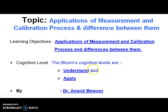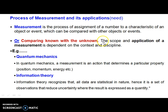I am Dr. Anand Bhavar. Today's topic of discussion is applications of measurement and calibration process and differences between them. The process of measurement, if you look at first, is basically a process of assignment of numbers to characteristics of an object or event. It could be simply explained as comparing the known with the unknown and letting us quantify it. Its scope and application are totally depending upon the context and discipline.